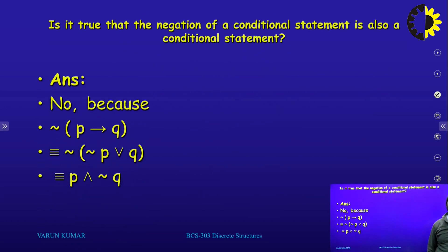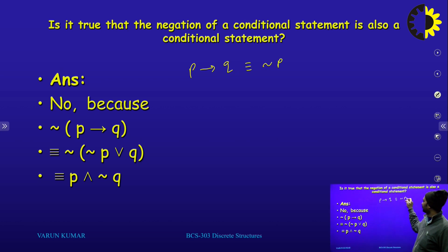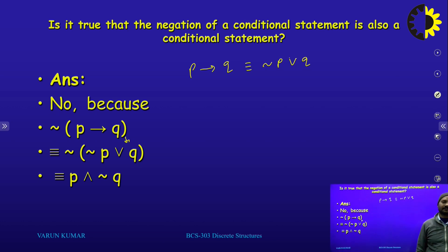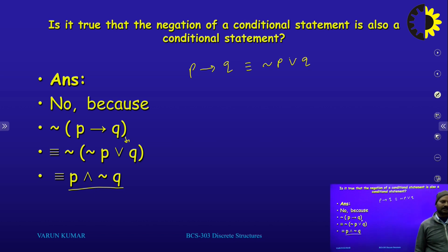Is it true that the negation of a conditional statement is also a conditional? No. What is the conditional statement? P implication Q. It is logically equivalent to negation of P disjunction with Q. Applying De Morgan's law — conjunction converted into disjunction, disjunction into conjunction — the result becomes P conjunction with negation of Q, which is not a conditional statement.